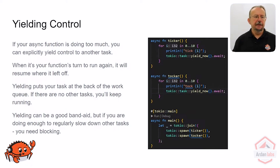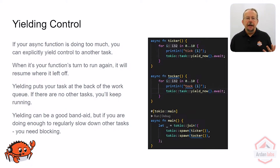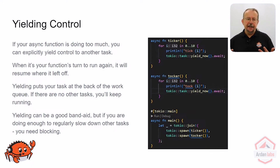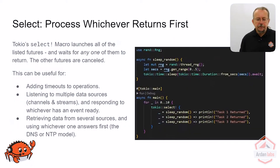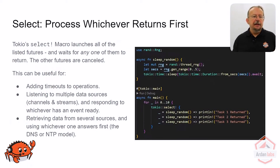You just keep going. yield_now is a good way to break up your code if you have something that looks like it's going to keep going for too long, but it's not always the best way to do it. We'll look at blocking in just a second for how to handle that.